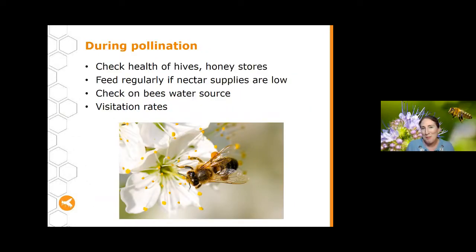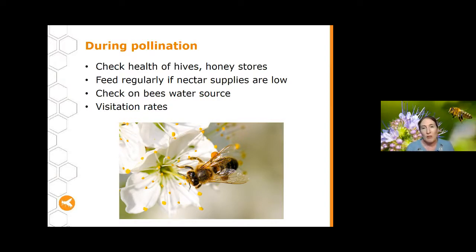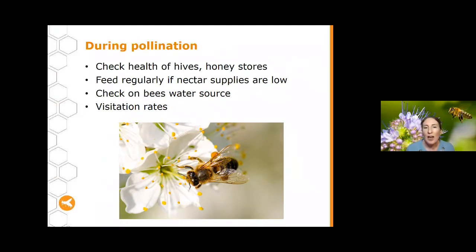During pollination, continue to check the health of your hives as well as the honey stores to make sure they're not succumbing to disease and that they've got sufficient food. If there's not sufficient food coming in, or if you want to try and maximise pollination, you may need to feed regularly and check on the bees' water source to make sure it hasn't dried out or been contaminated. You may also want to monitor visitation rates — counting how many bee visits come to a particular plant over a period of time to check whether you've got enough bees for good pollination.